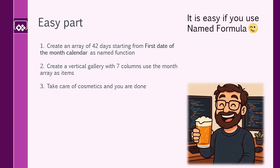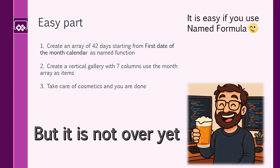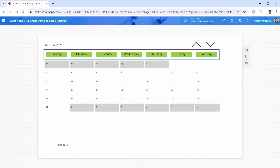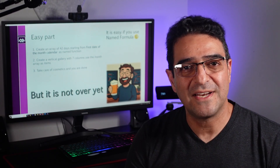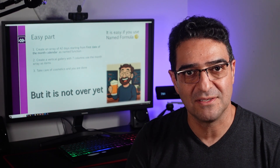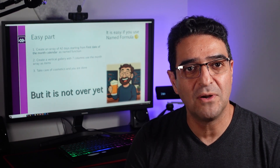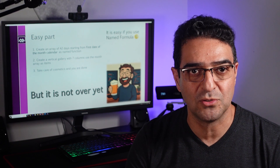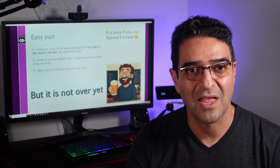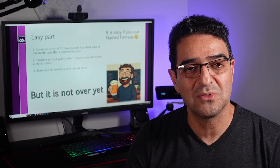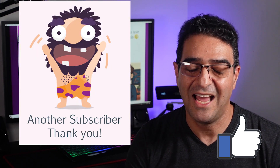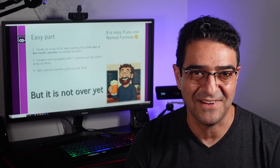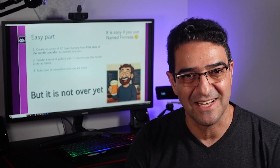We created an array of 42 days starting from the first day of the month calendar using Sequence. We created a vertical gallery with seven columns and used the month array as items. We took care of the cosmetics, and just like that, you're done. But hold on — do not celebrate too early. This is not over yet. There is a part two to this video that I will make next month. You have a month from today to tell me what you want me to add to part two in the comments section. Crushing those like and subscribe buttons will definitely improve the quality of future videos. Thank you for watching and I will see you soon in the next video.